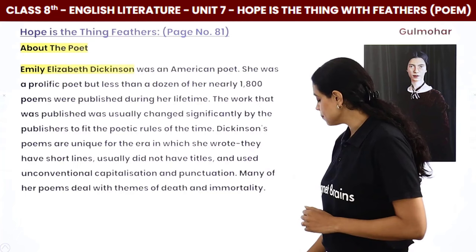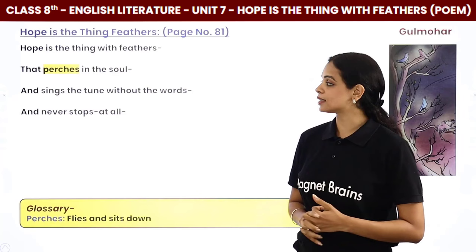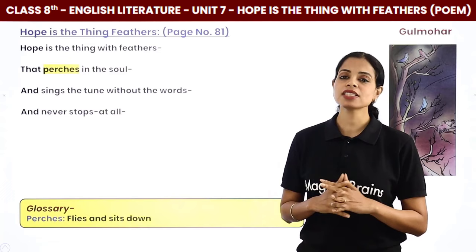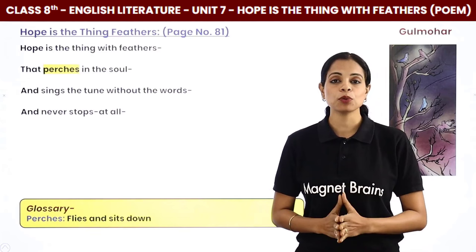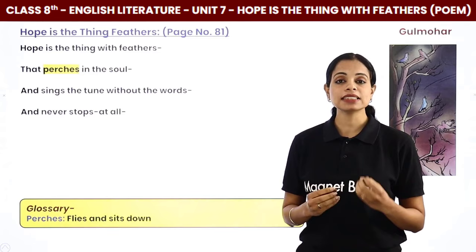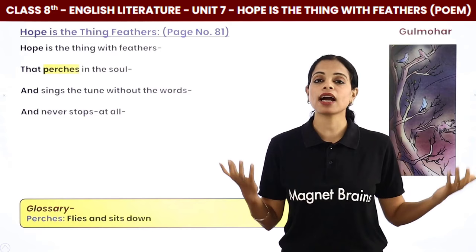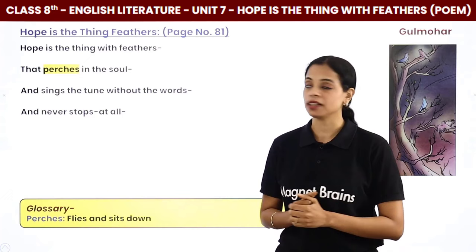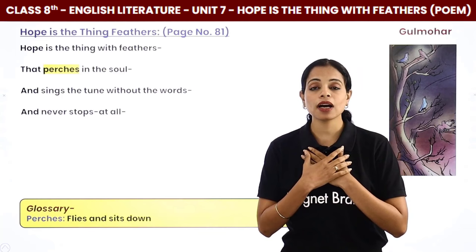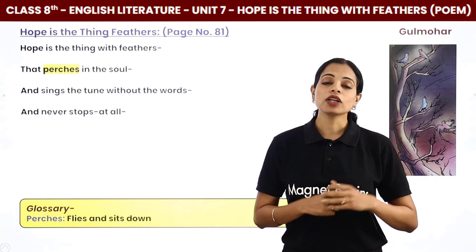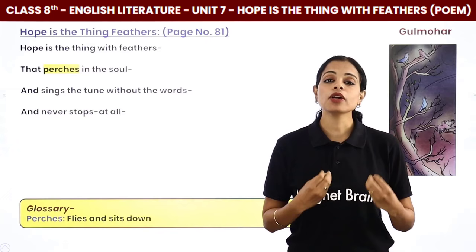Let's start with the poem: 'Hope is the thing with feathers that perches in the soul, and sings the tune without the words, and never stops at all.' Here our poet compares hope metaphorically to a bird — something that has feathers. Hope is an abstract idea, but here she animates it and compares it to a living being that perches in the soul.